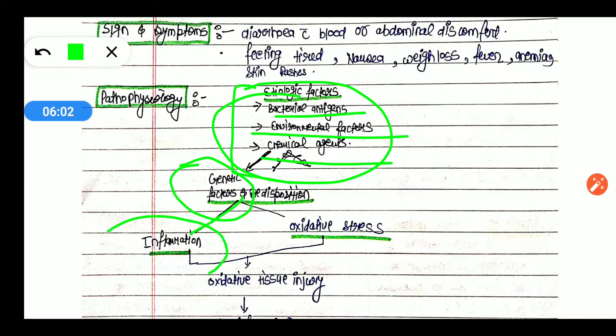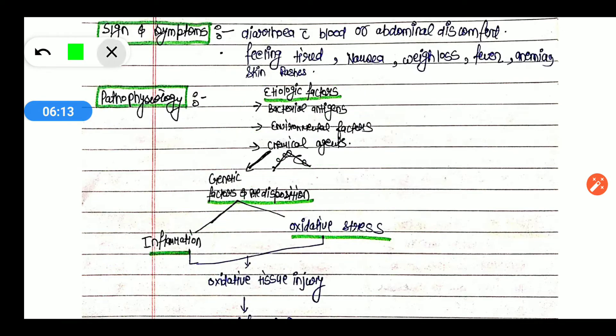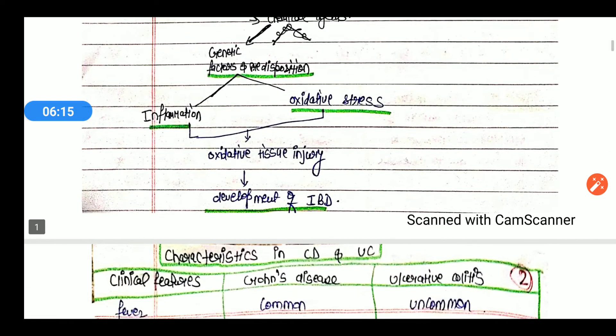First is inflammation. Inflammation is caused by IBD. Second is oxidative stress. Inflammation directly causes IBD, but oxidative stress has also been caused by IBD. Oxidative stress leads to oxidative tissue injury.